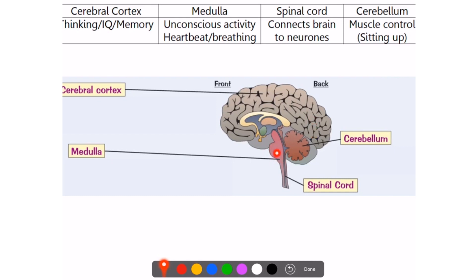The spinal cord connects the brain to the rest of the central nervous system and neurons. And of course you've got the cerebellum, which is this area over here.